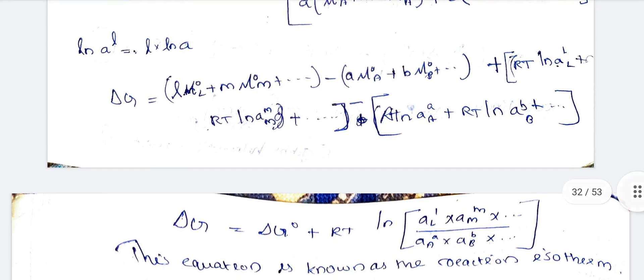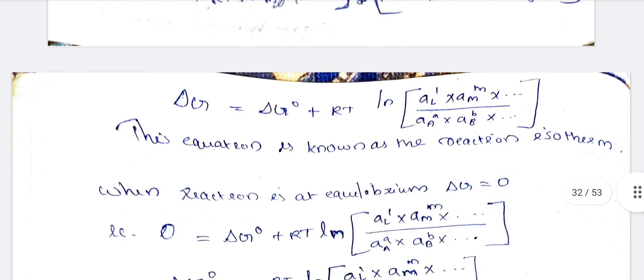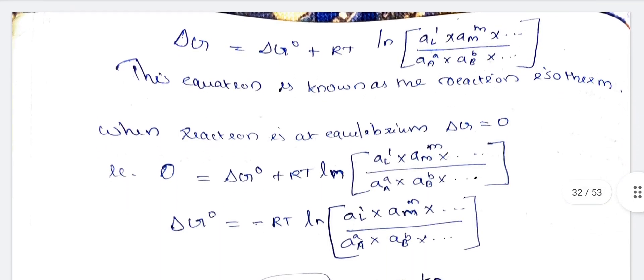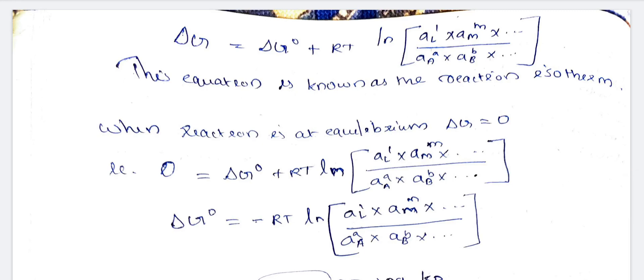Collecting terms: delta G = [L·μ°L + M·μ°M + etc. minus A·μ°A minus B·μ°B + etc.] + RT ln [(aL^L · aM^M · etc.) / (aA^A · aB^B · etc.)]. This simplifies to delta G = delta G° + RT ln Q, which is the Van't Hoff reaction isotherm.